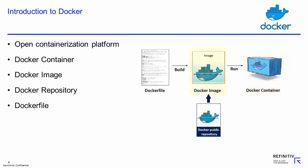Docker containers are started or run from a Docker image, which is a template used by Docker to launch a container. A Docker image can be pulled from the Docker public repository or built from a Docker file. A Docker file is a text-based script that contains special commands in a sequence for building new images from existing base images. The commands include selecting the base image from the Docker repository, adding metadata, installing all the required applications, compiling the applications, and setting up environment variables.